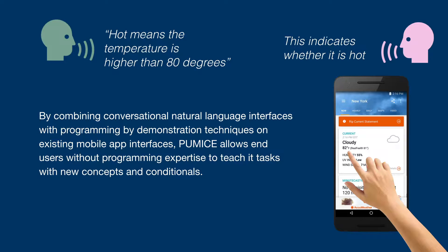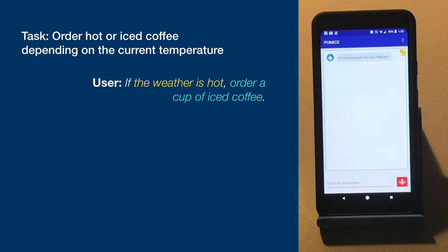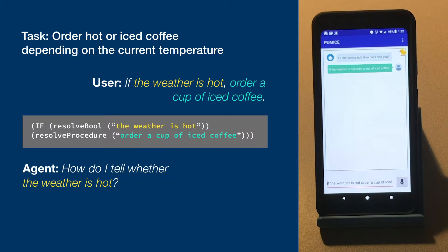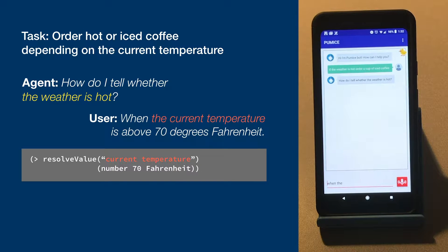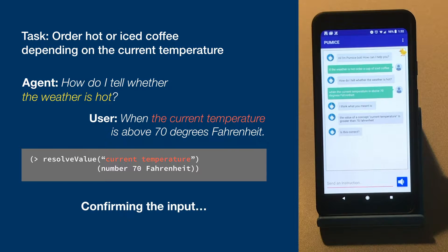Here we use an example to demonstrate how PUMIS works. If the weather is hot, order a cup of iced coffee. How do I tell whether the weather is hot? When the current temperature is above 70 degrees Fahrenheit. I think what you meant is: the value of a concept, current temperature, is greater than 70 Fahrenheit. Is this correct? Yes.